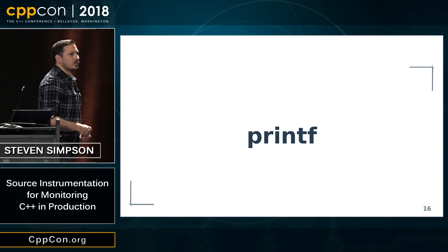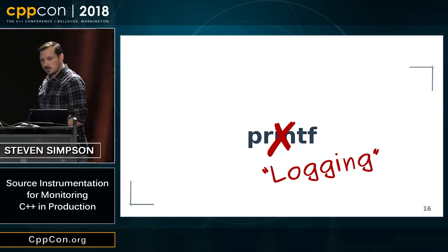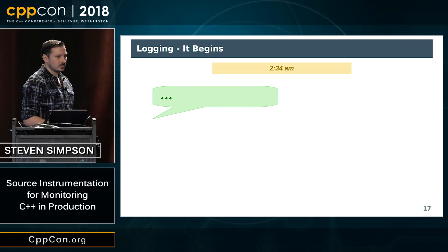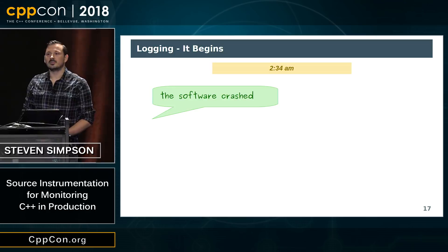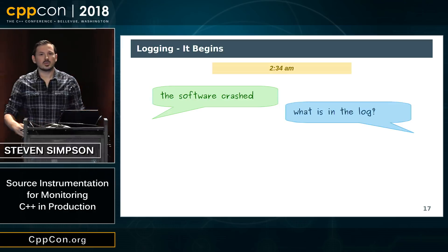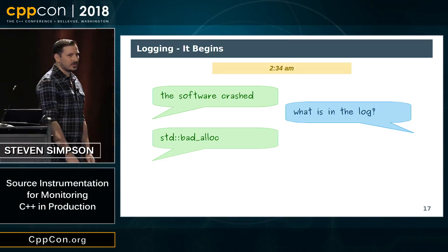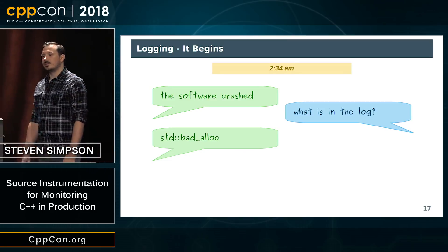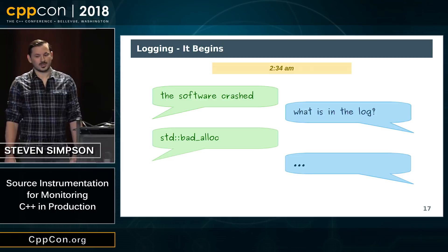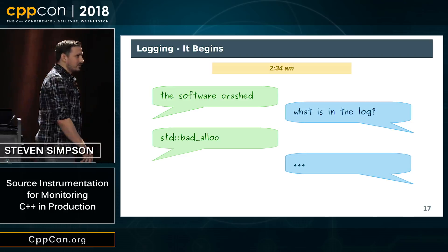The best form of instrumentation — printf, I mean, logging. Always get that wrong. So this is what logging is for. At some point early in the morning you'll get a message saying your software crashed. This will happen. Prepare for it. And you will ask, what's in the log? And what they'll tell you is: std::bad_alloc. You then have to work out why, and you might question why you became a software developer. Maybe you start looking on Stack Overflow for new jobs.